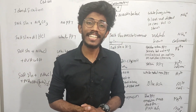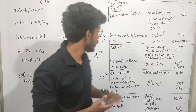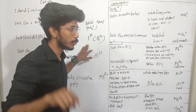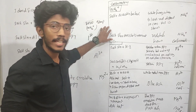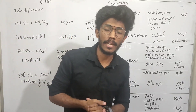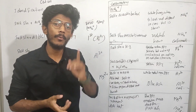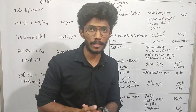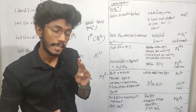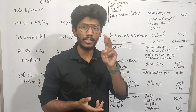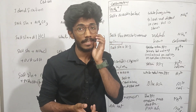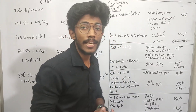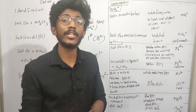Hello guys, I am going to study cations in this video. Now let's check cations. Cations have two parts: one is identification and the other is confirmatory. Cation is the first one — identification — and two is confirmatory. If you have to study cations, you can find them.